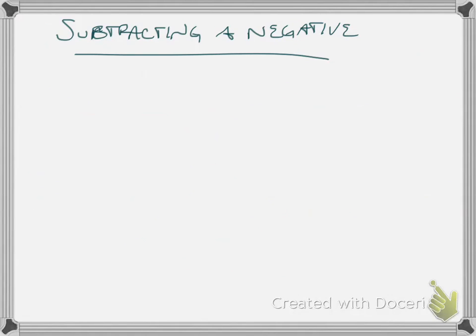When you're subtracting a negative, instead of subtracting a negative, you're going to add a positive. So if you have negative 4 minus negative 10, instead of subtracting negative 10, what that does is you add the opposite, so it's adding a positive 10. So it's negative 4 plus 10. Now these are different signs. Find the difference between 10 and 4, which is 6. Keep the sign of the larger number, it stays positive.